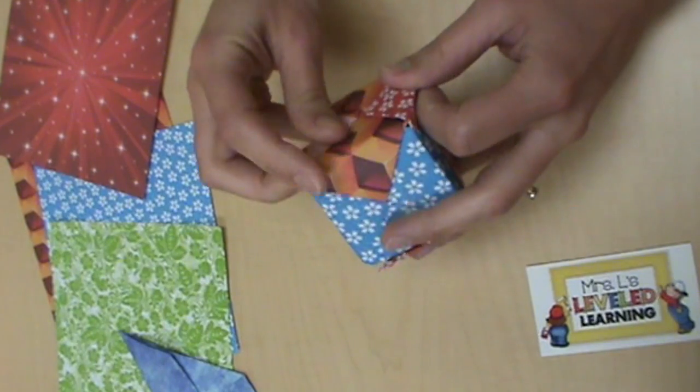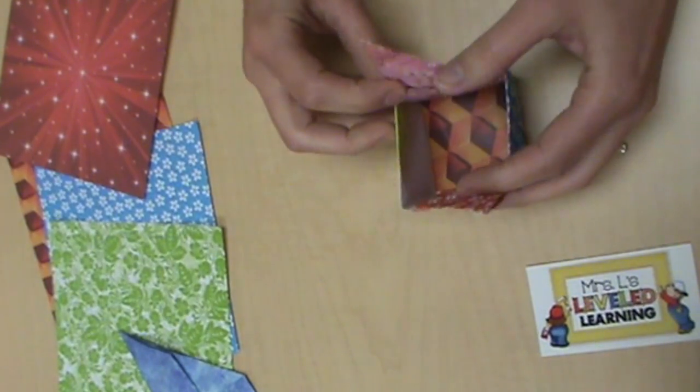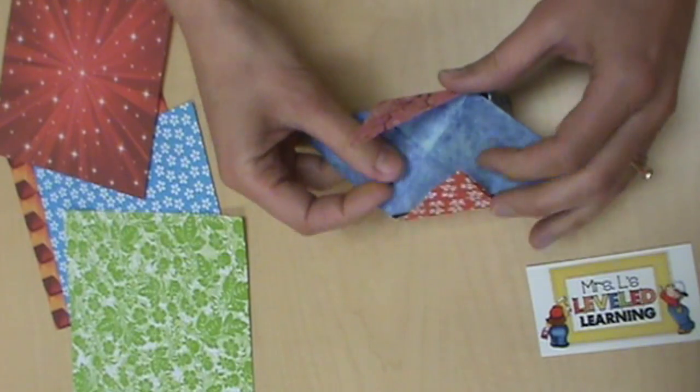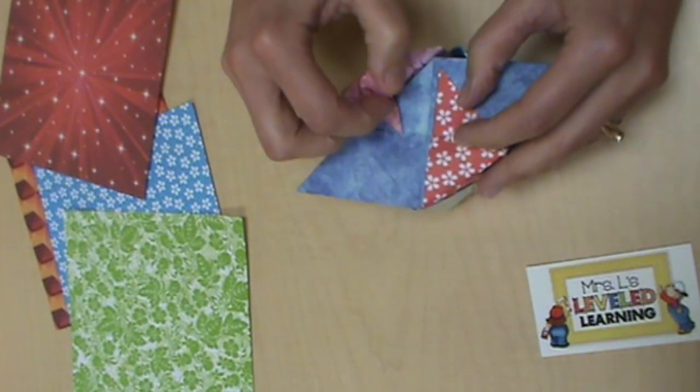Flip it over and we'll do the bottom. You're going to do the same thing again, tucking in those triangles into every pocket.